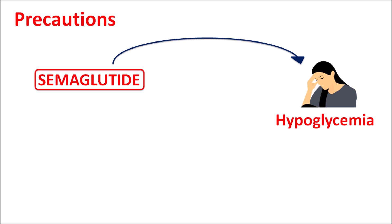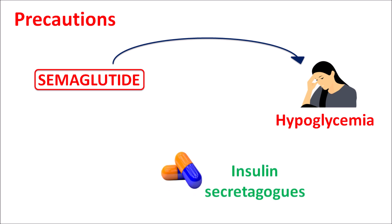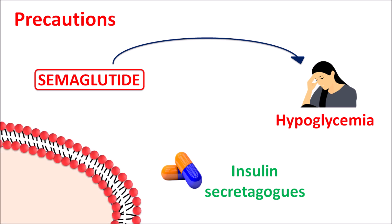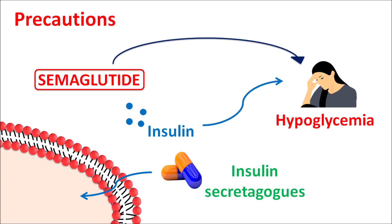Since semaglutide reduces glucose levels, it can produce hypoglycemia, causing weakness in patients. This risk is further increased when combined with other drugs like insulin secretagogues — for instance, sulfonylureas act on beta cells to also increase insulin secretion, producing additional hypoglycemia. When semaglutide is combined with insulin secretagogues like sulfonylureas or with insulin preparations, care should be taken to reduce the risk of severe hypoglycemia.